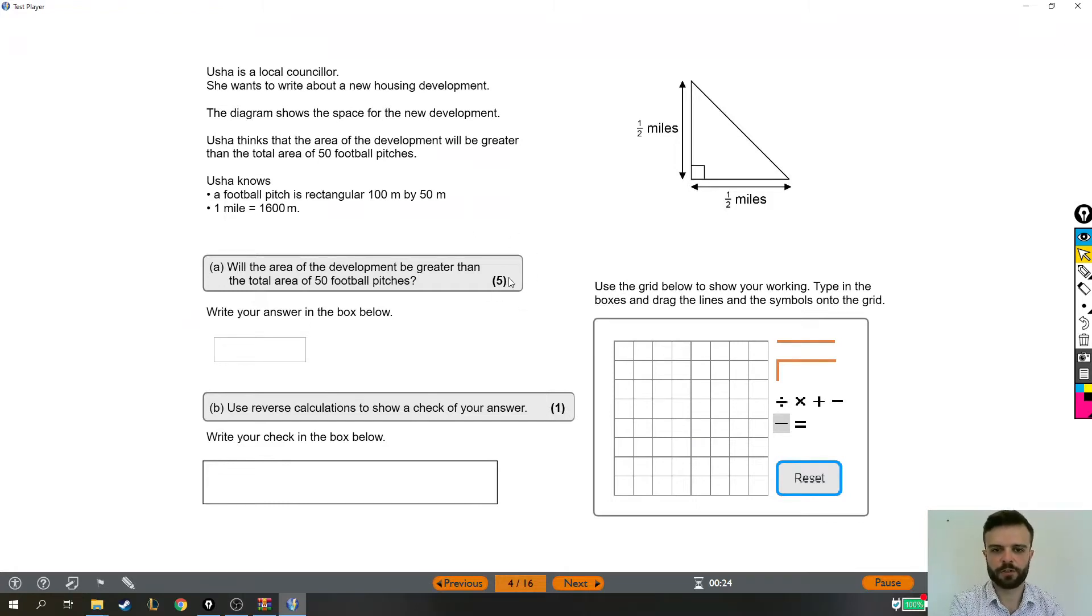Alright, so this particular functional skills question is a bit of a beast. There's a lot to it and it's five marks for the first part and an extra mark at the bottom for doing a check of our answer. Let's give it a read-through and we'll talk about how we're going to tackle this.